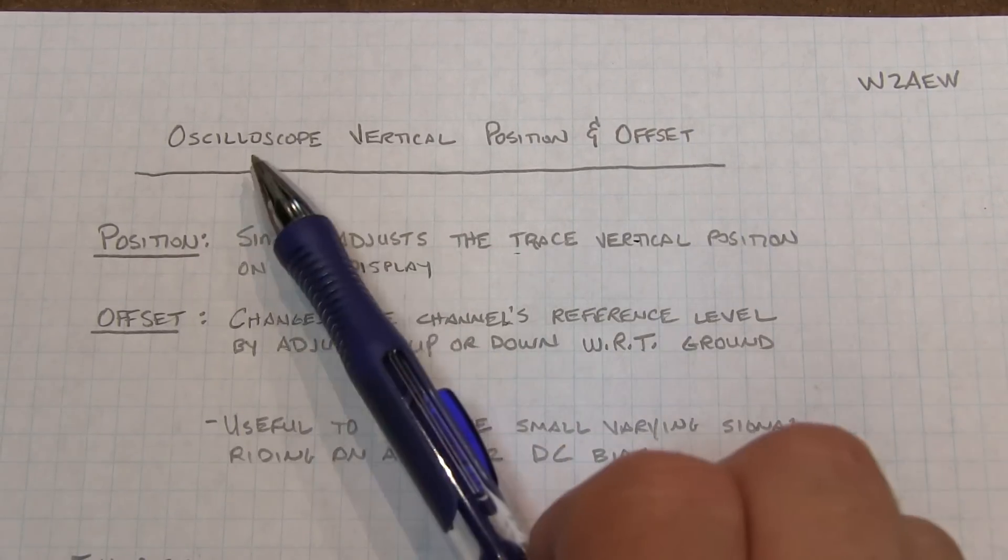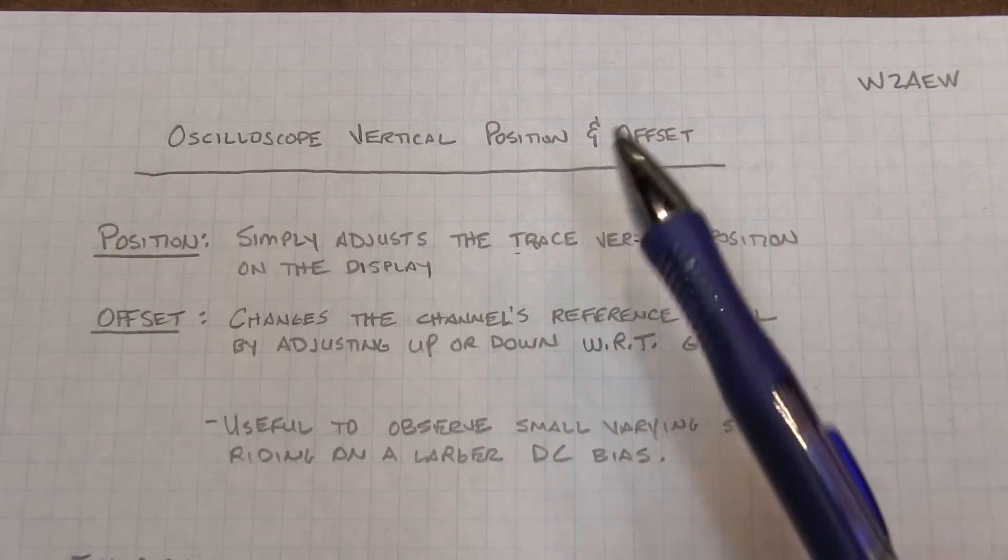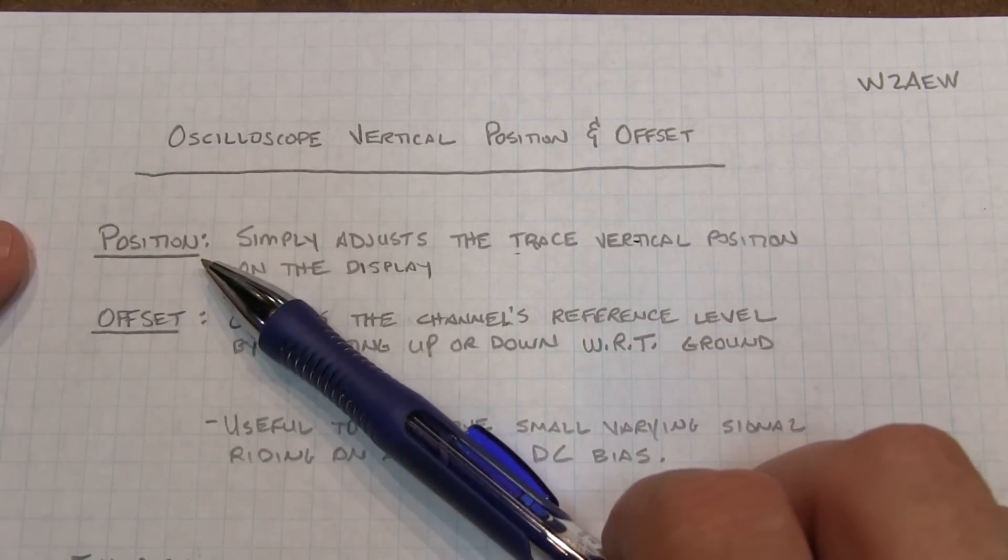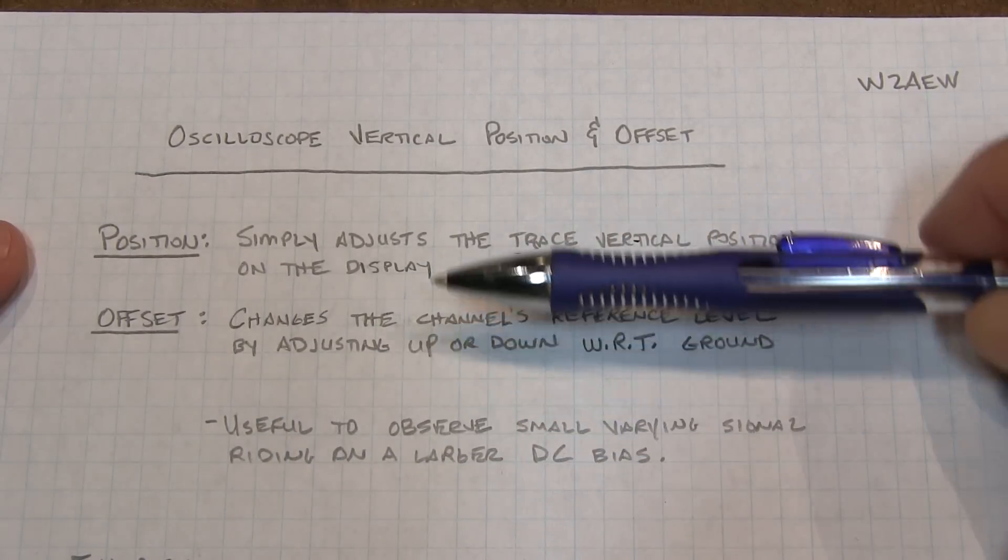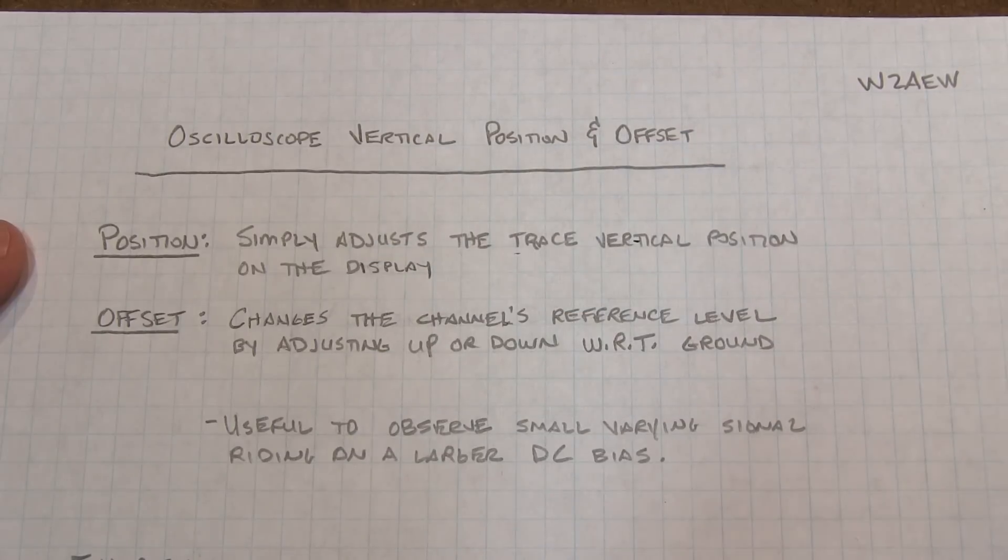In today's short video, we're going to talk about your oscilloscope's vertical position and vertical offset controls. The position control is quite obvious, it just simply adjusts the vertical position of the trace on the screen.